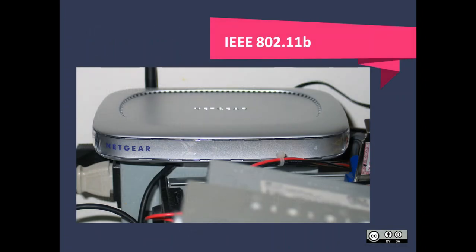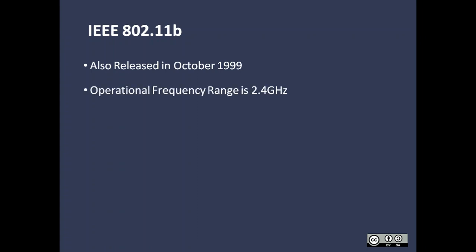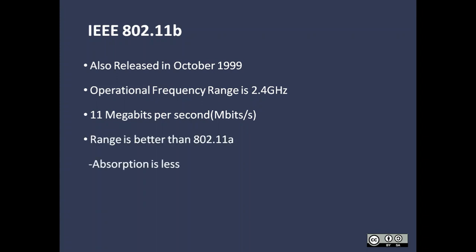Let's move to 802.11 B. The IEEE 802.11 B standard was also released in October 1999. It operates on the frequency range of 2.4 GHz. It has a speed of 11 Mbps. The range of this standard is better than 802.11 A, because in 2.4 GHz there is less absorption compared to 5 GHz.